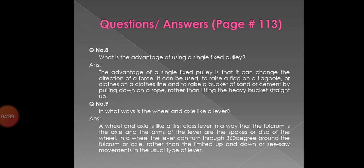Question number 9. In what ways is the wheel and axle like a lever? Answer: a wheel and axle is like a first class lever in that the fulcrum is the axle and the arms of the lever are the spokes or discs of the wheel. In a wheel, the lever can turn through 360 degrees around the fulcrum or axle, rather than the limited up and down or seesaw movements in the usual type of lever.